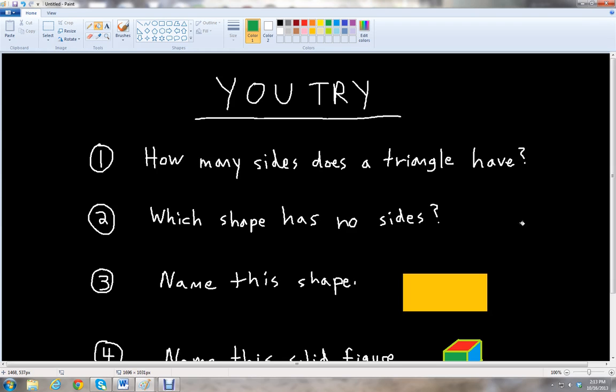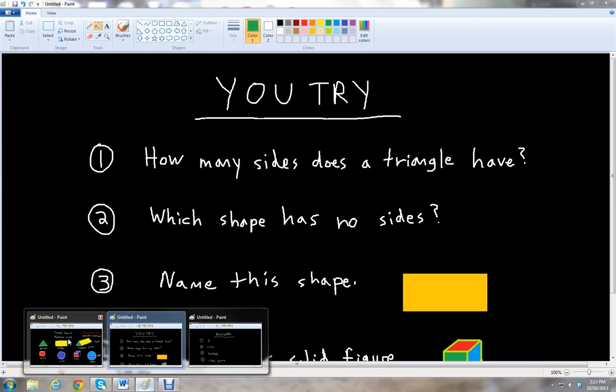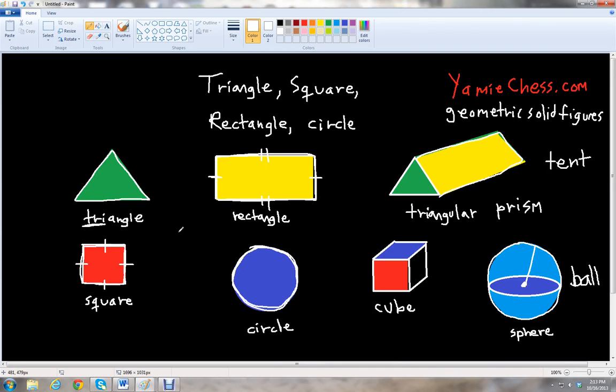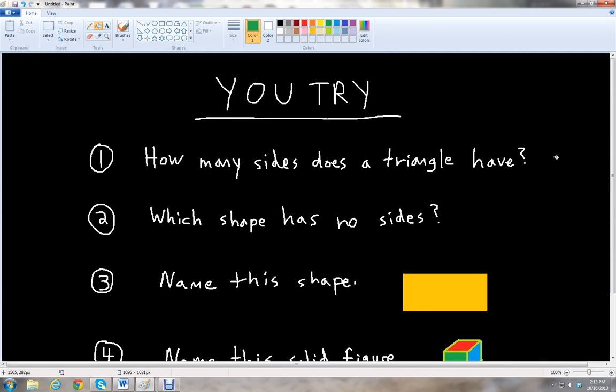Okay, so let's go over the first question. How many sides does a triangle have? So we'll go back to our shape. And so here is the triangle. So we notice that the triangle has one, two, three sides. Three sides for the triangle.